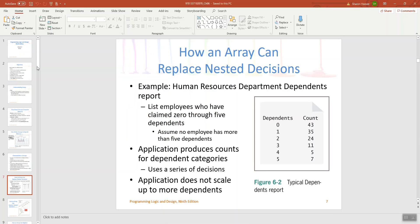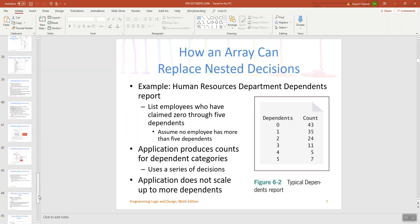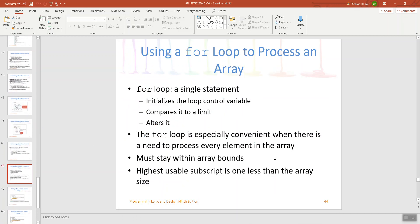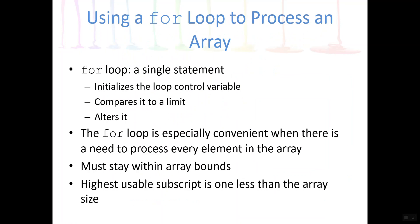So I am skipping around a bit here. I'm going to jump forward to slide 44 just to formalize this. So a for loop, remember it initializes the loop control variable, compares it to a limit, and alters it. We did see that just prior to that while loop example. For loops are a favorite for working with arrays because as the previous bullet point says, it handles all three in a single line of code. So it's very concise.